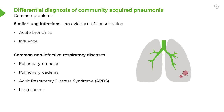Lung cancer needs to be thought about — especially in patients over 50 who smoke — because it can cause infection distal to where it's obstructing the bronchus, or the X-ray shadowing may represent a large tumour rather than consolidation. ARDS presents with bilateral consolidation and marked hypoxia, and is frequently a consequence of pneumonia. It can also occur without pneumonia, presenting as bilateral consolidation that might be confused with pneumonia in certain circumstances.